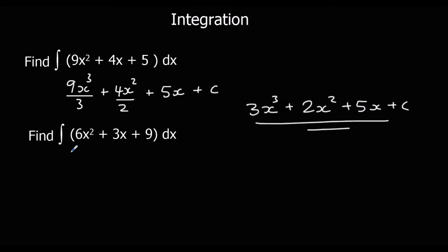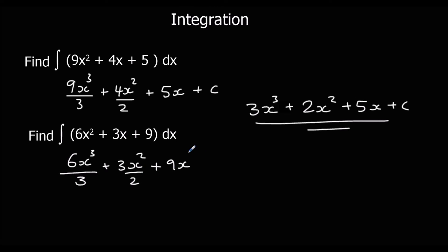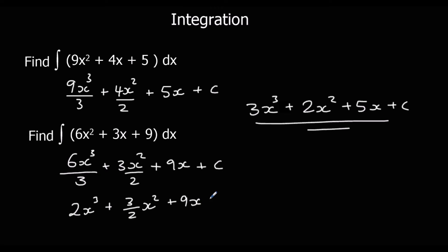Same again: follow the same process — add 1 to the power, divide by the new power, and put a plus c on the end. We add 1 to the power and divide by the new power for each term. Simplifying: 6 over 3 is 2; 3 over 2 we can leave as 3 over 2, x squared; plus 9x; plus c.